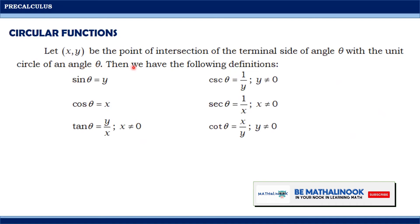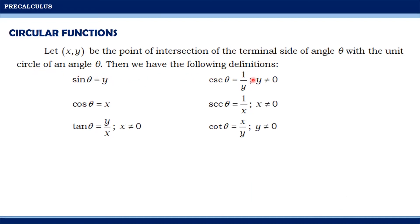Let (x, y) be the point of intersection of the terminal side of angle theta with the unit circle. Then we have the following definitions: sine theta equals y; cosine theta equals x; tangent theta equals y over x, where x ≠ 0; cosecant theta equals 1 over y, where y ≠ 0; secant theta equals 1 over x, where x ≠ 0; and cotangent theta equals x over y, where y ≠ 0.